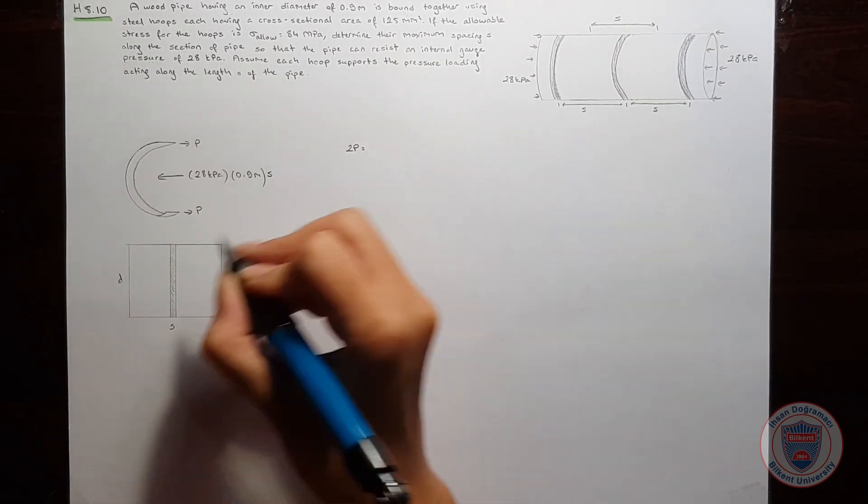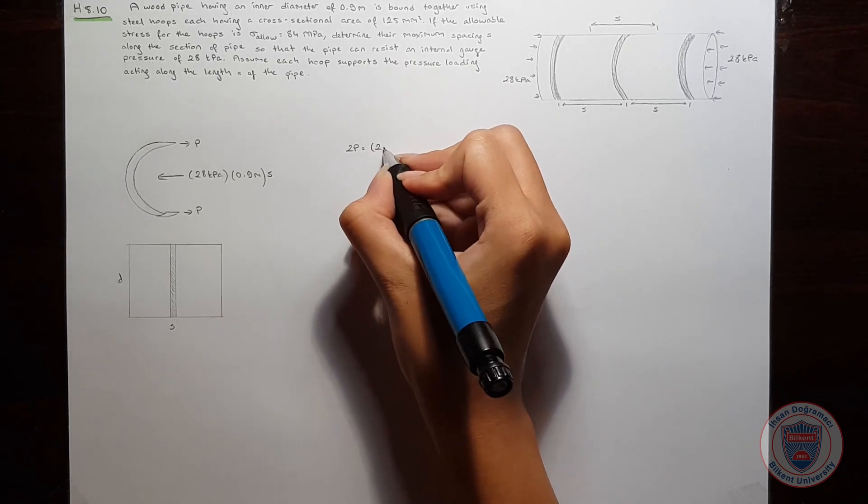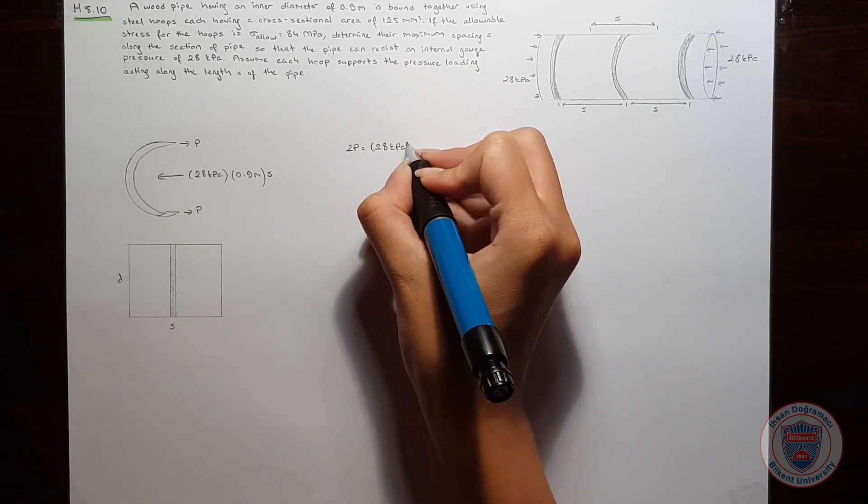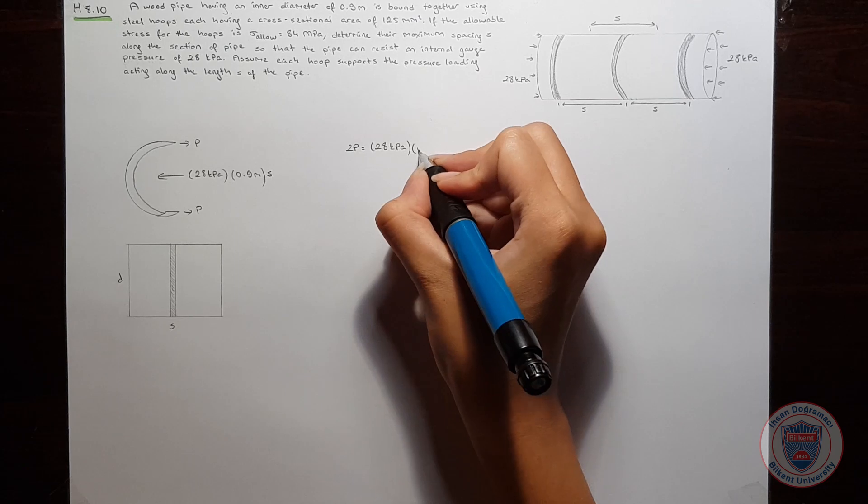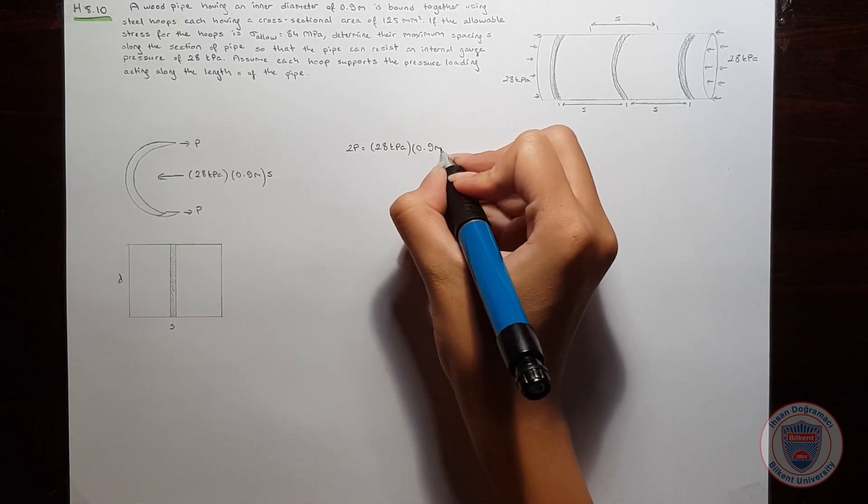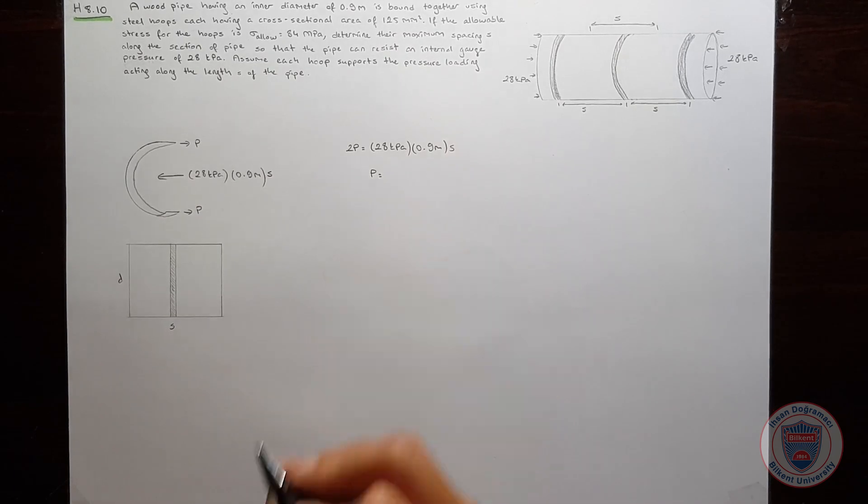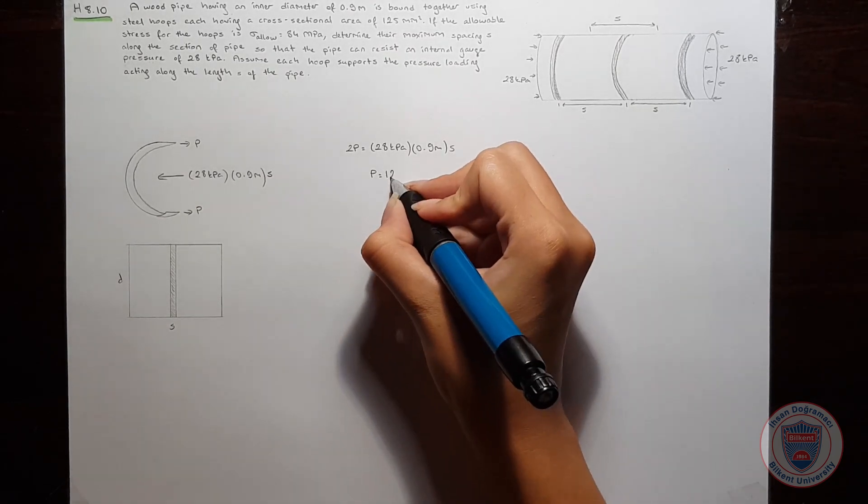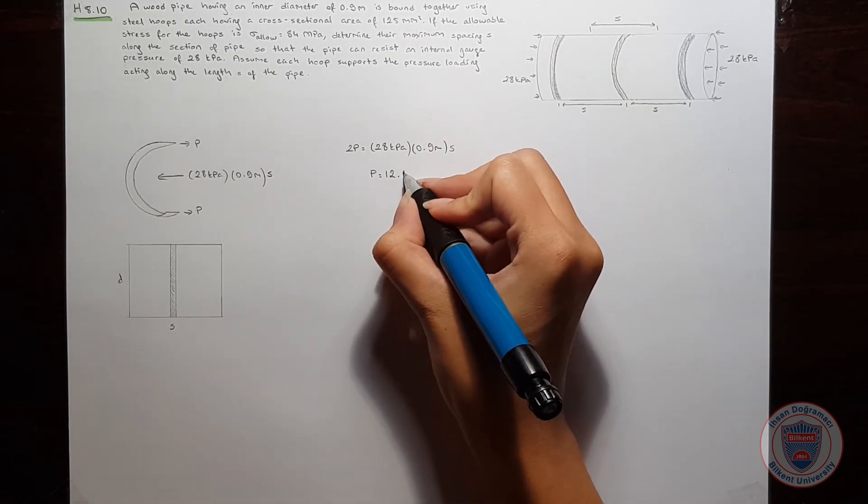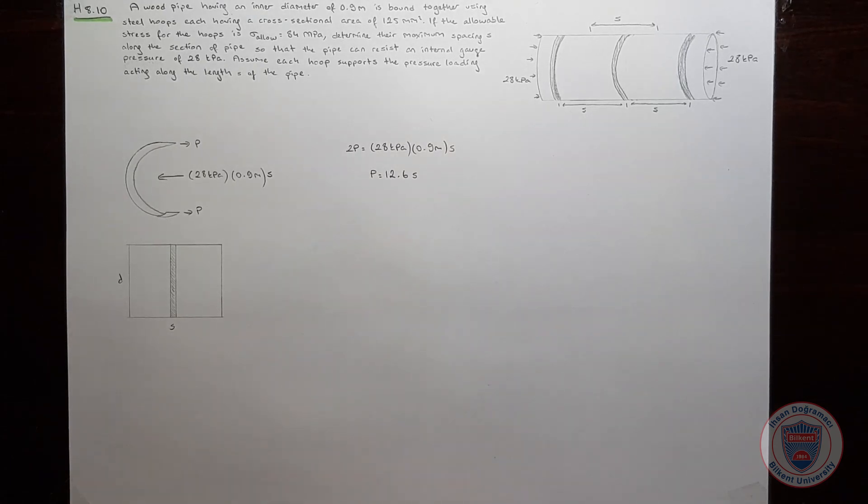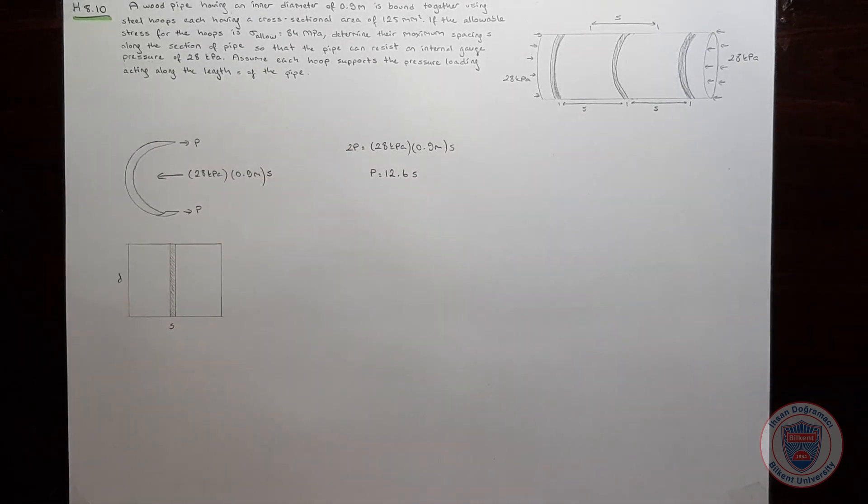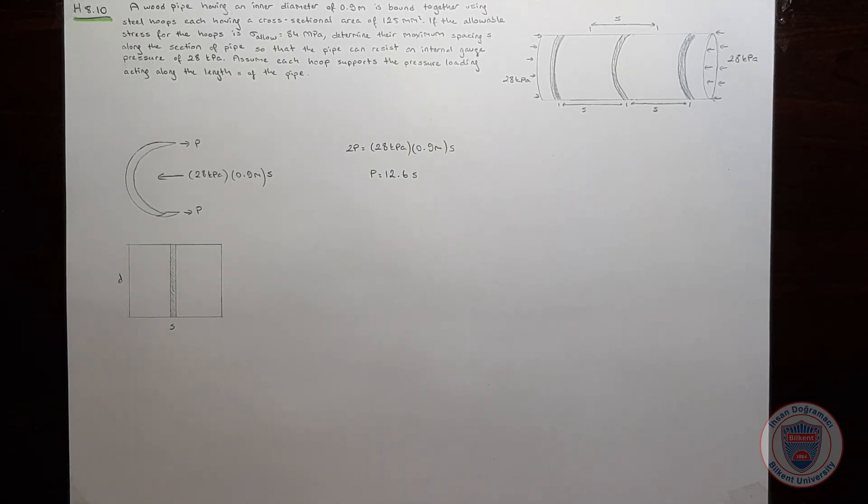2P equals 28 kPa times 0.9 meters times S, so P equals 12.6S. We know our force is 12.6S. Now let's talk about the allowable stress.